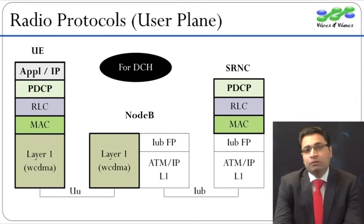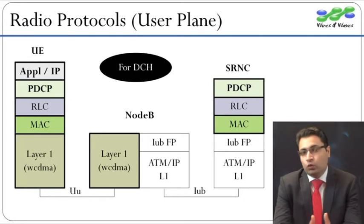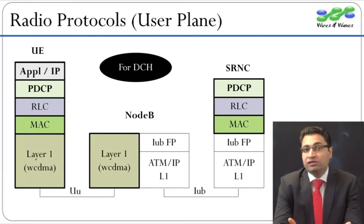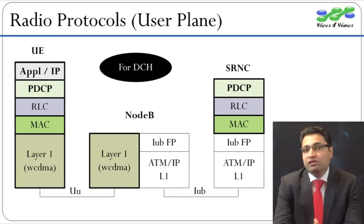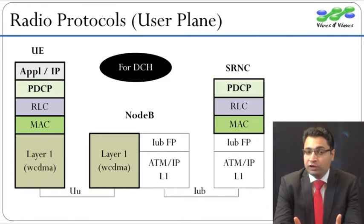In this example, we can see how an IP packet gets transmitted to UE in downlink. When SGSN sends and RNC receives an IP packet, first of all the PDCP layer compresses the IP header and passes it to the RLC layer, or radio link control layer.